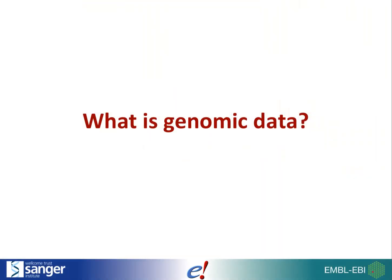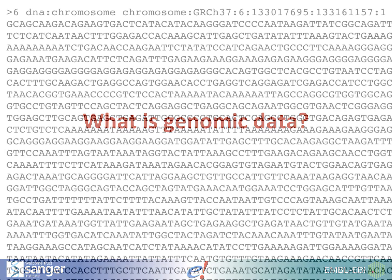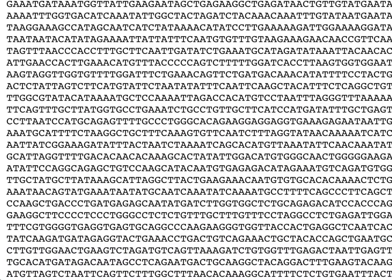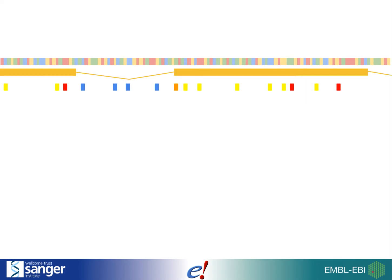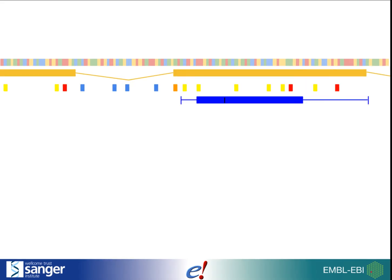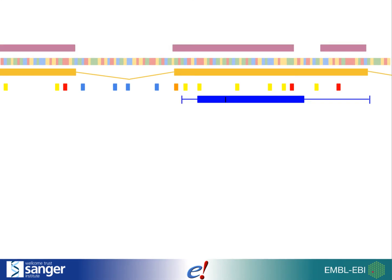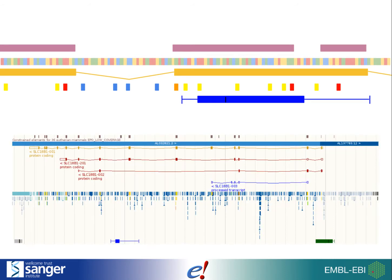What do I mean by genomic data? There are many different kinds of data that we have about genomes. Firstly, we have the genome sequence itself. On top of the sequence we can plot features such as genes and transcripts, variation between individuals, the binding patterns of proteins on the DNA which regulate genes, and comparisons between species. All of these features can also be accessed from our database.